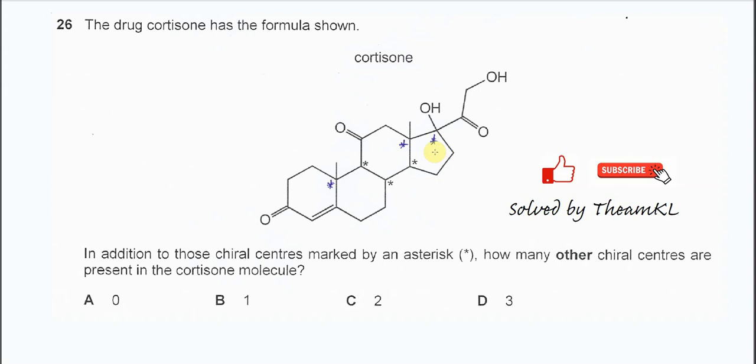Question 26. A structure given with three chiral centers in there. And now the question asks how many other chiral centers are present in this cortisone molecule. So it means other than these three, how many chiral centers are in the molecule.